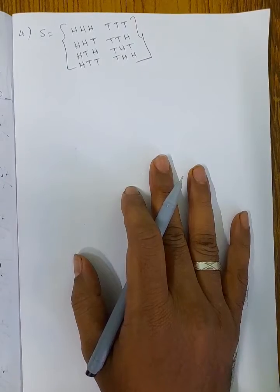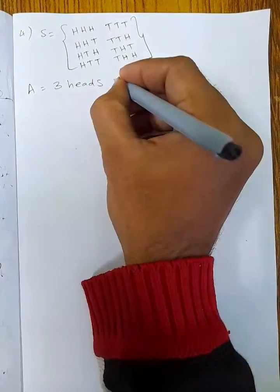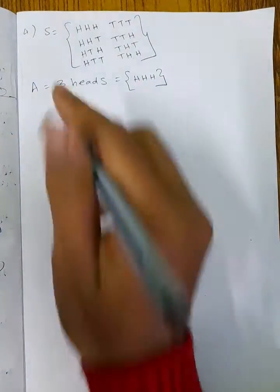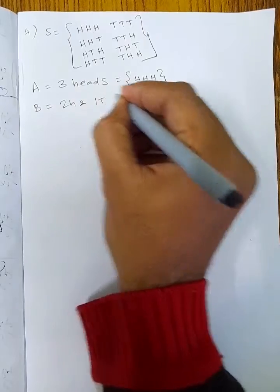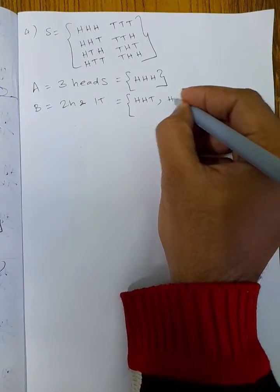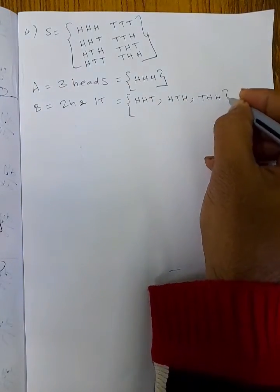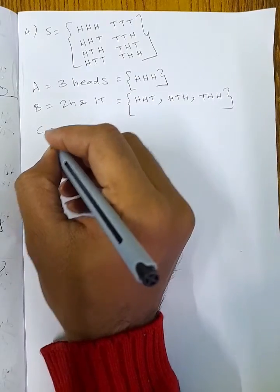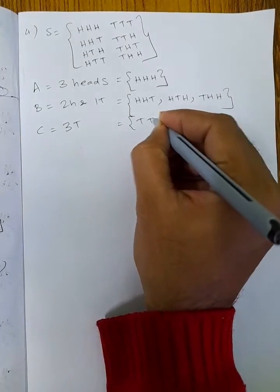Event A — three heads: A = {(H,H,H)}. Event B — two heads and one tail: B = {(H,H,T), (H,T,H), (T,H,H)}. Event C — three tails: C = {(T,T,T)}.